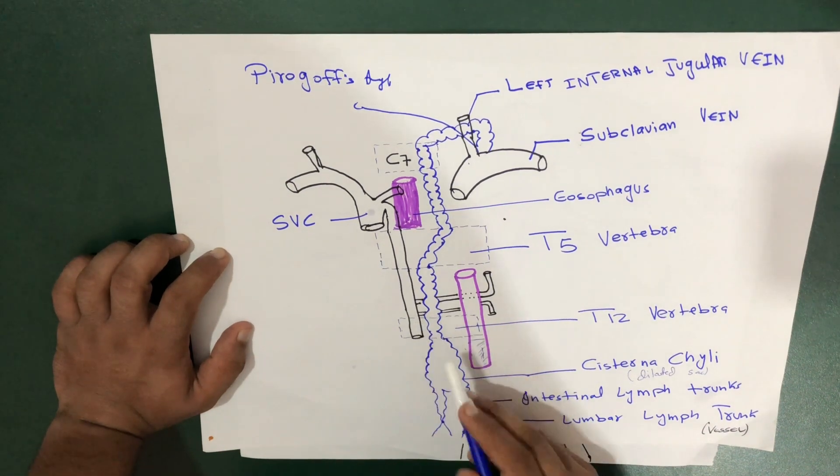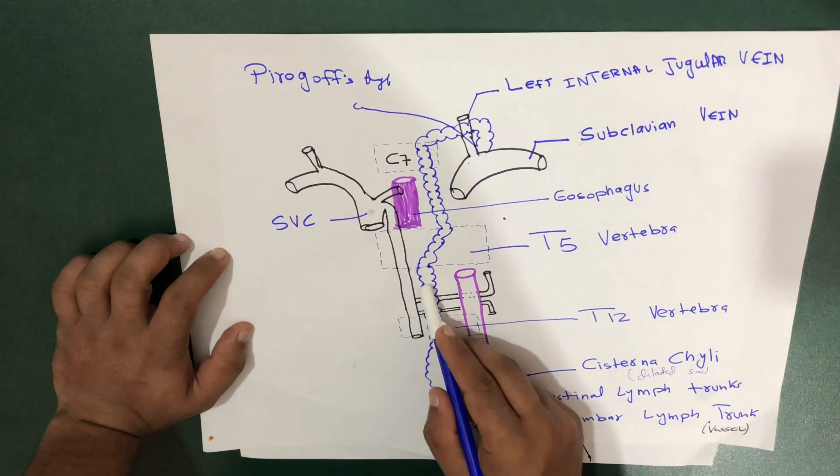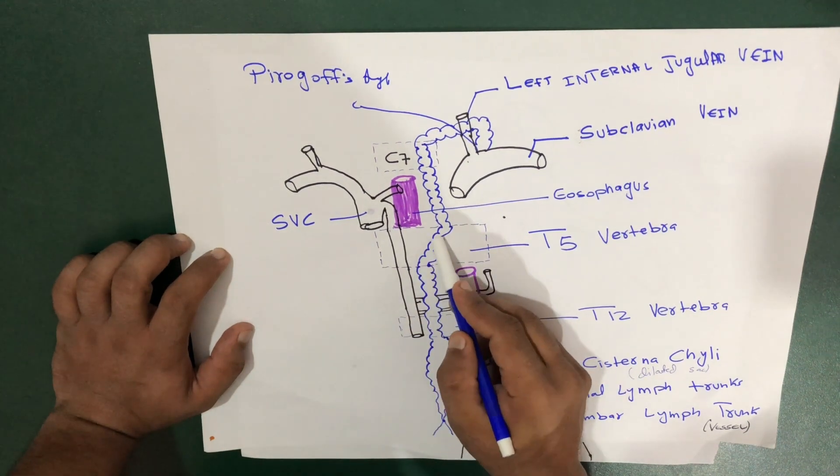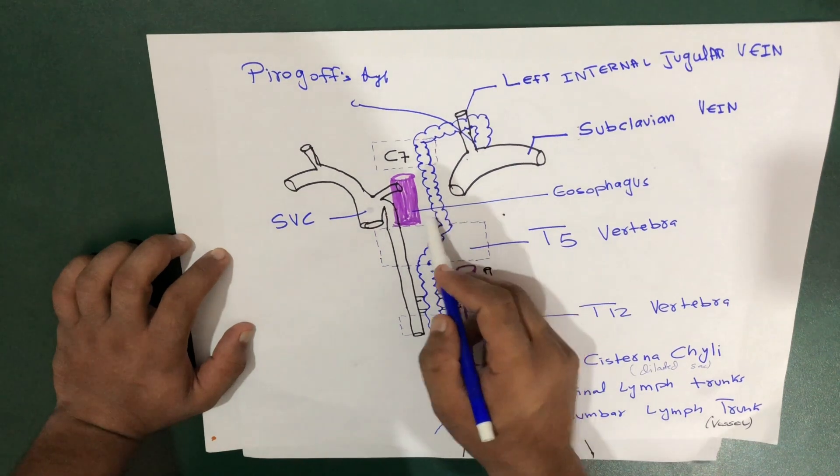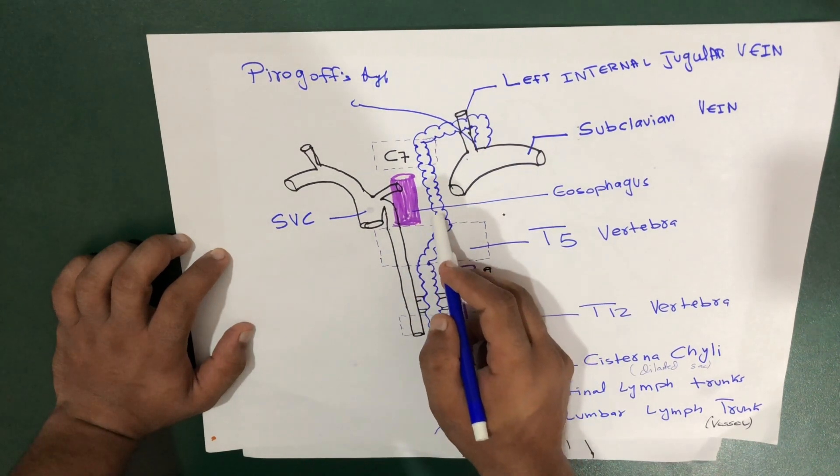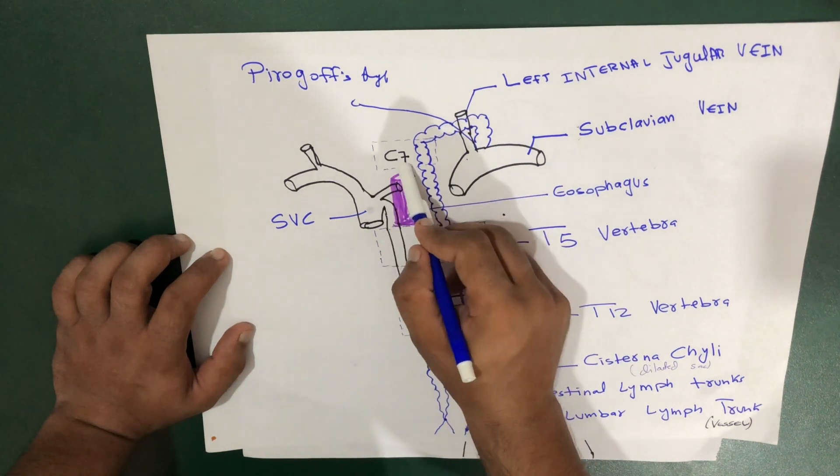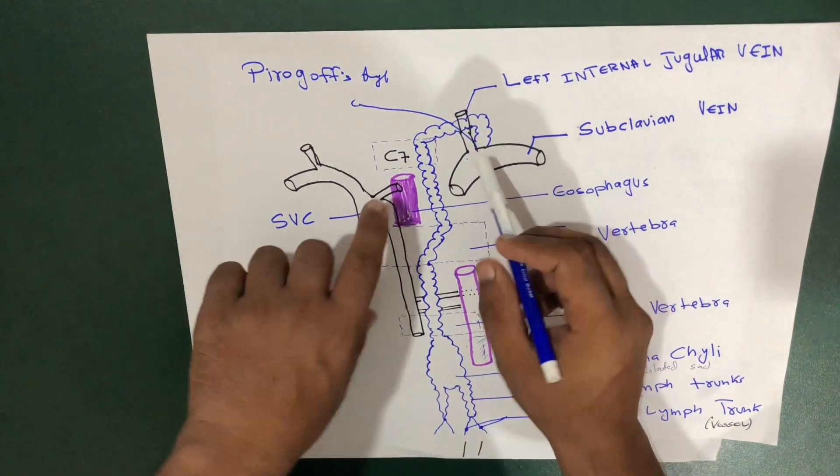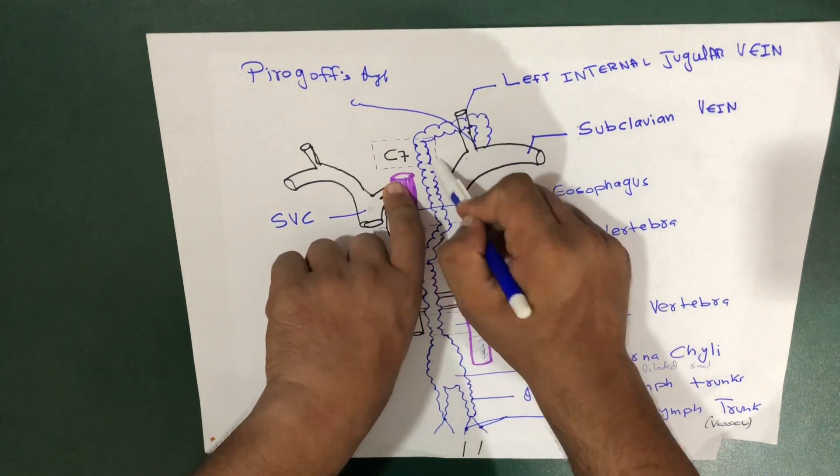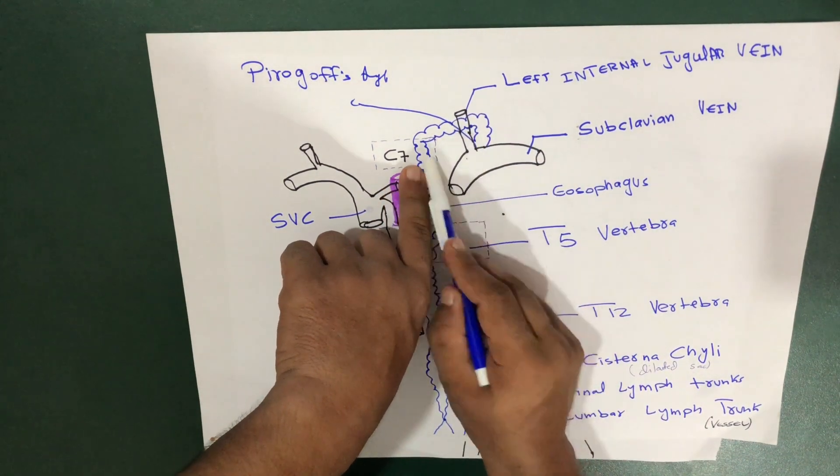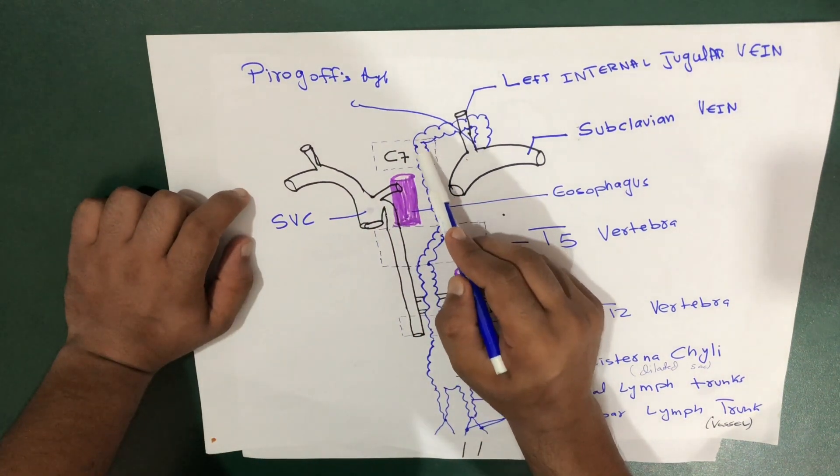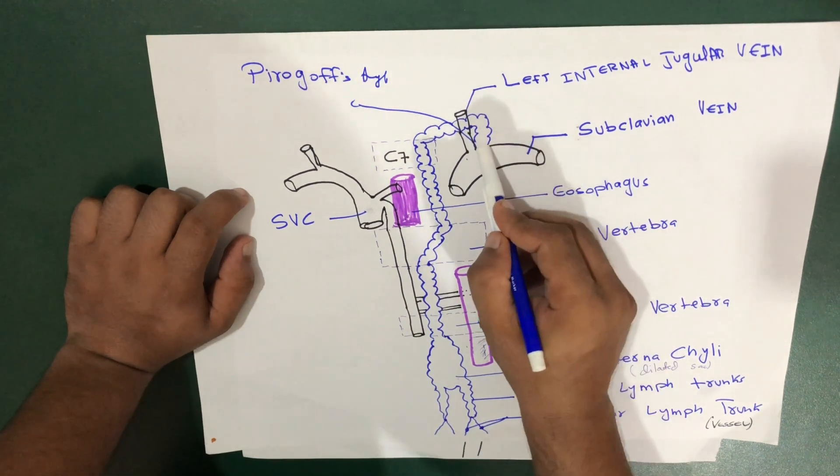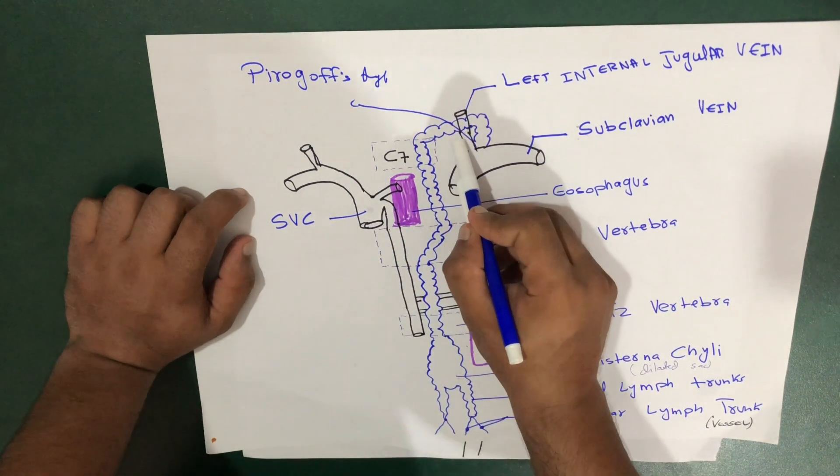Above the cisterna chyli, we enter the thoracic duct at T12 and move upward. At the level of T5, it takes a turn and becomes straight with the esophagus. It continues upward, and at the level of C7, it takes a right turn.